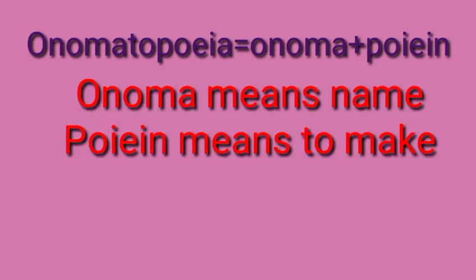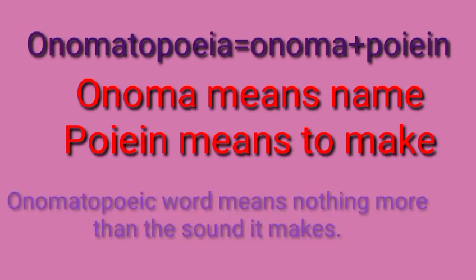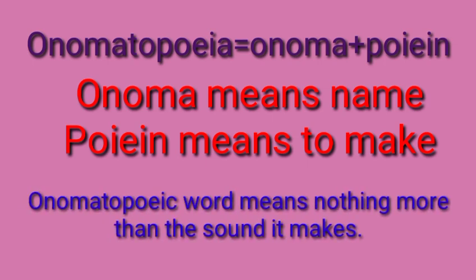The word onomatopoeia is the combination of two Greek words. The first is 'onoma,' which means name, and the second is 'poiein,' which means to make. Together it means to make a name or sound — in other words, the word means nothing more than the sound it makes.